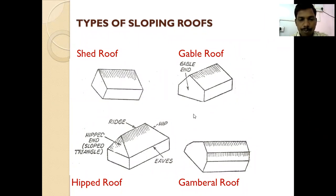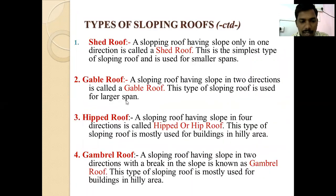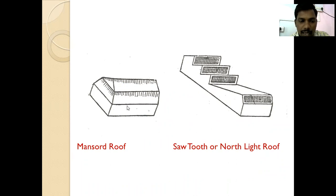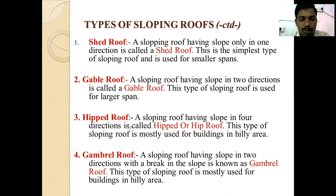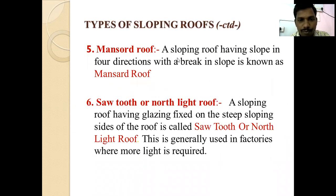The fifth type is the mansard roof. A sloping roof having slope in four directions with a break in slope is known as a mansard roof. It is similar to the hip roof in that slope is provided in four directions, but additionally a break is provided between the slopes from all sides.